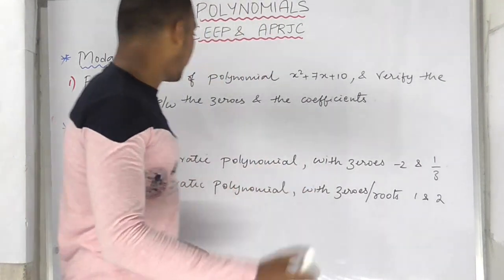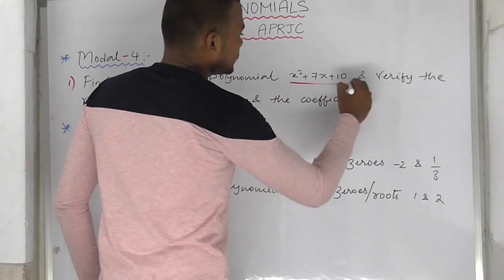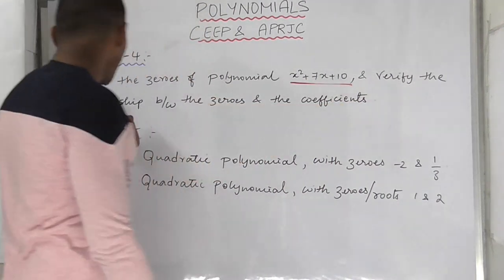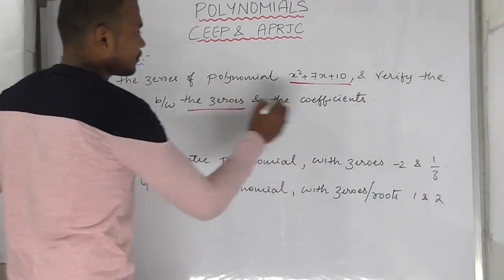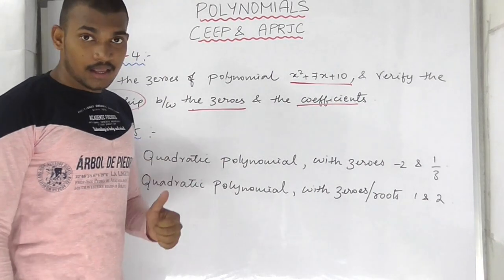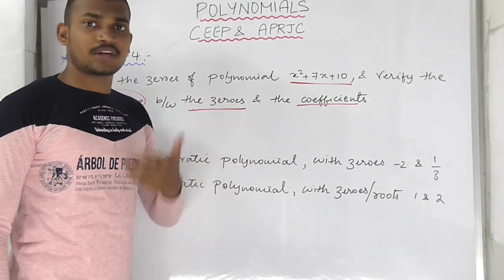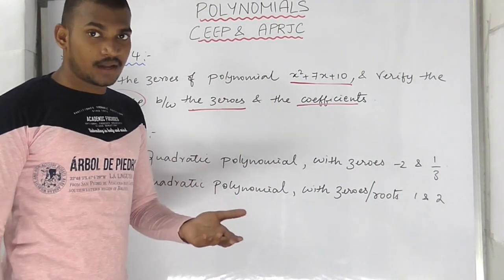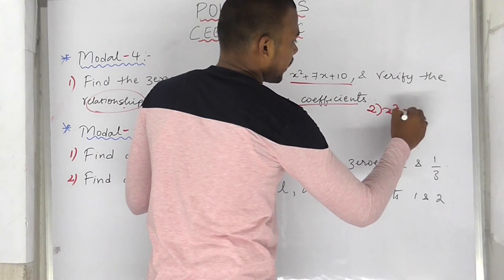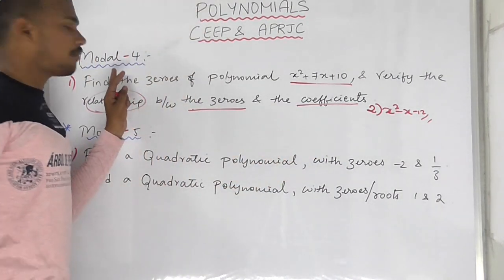Now the next models — model number 4: find the zeros of the polynomial, verify the relationship between the zeros and the coefficients. Relationship means alpha plus beta plus gamma for cubic, or alpha plus beta for quadratic. We find the roots and then verify the relationship. For example, for x squared minus x minus 2, we find the relationship — this is model number 4.